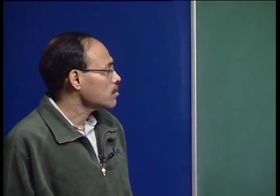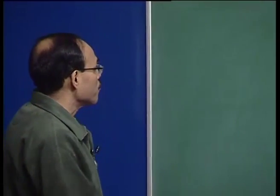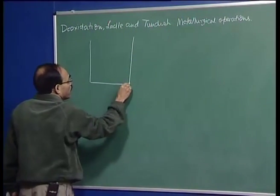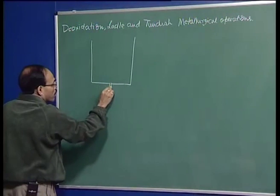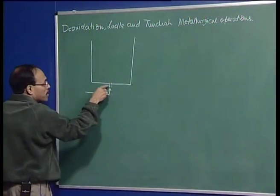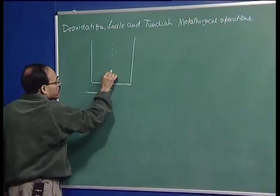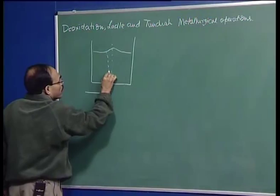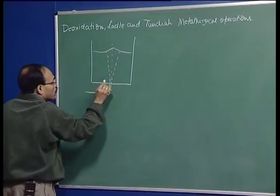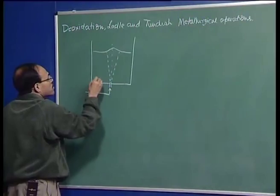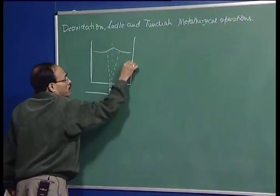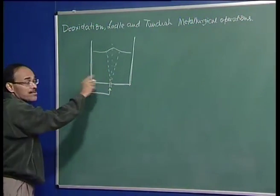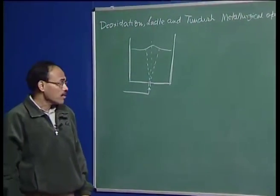Let me now give you a physical picture of gas injection through a schematic of an axisymmetric injection. I have placed the nozzle at the center line; this is the plume boundary, this is the axis, and this represents the bath of the ladle. The nozzle is placed at the center line along the axis of symmetry — that is why it is an axisymmetric gas injection.